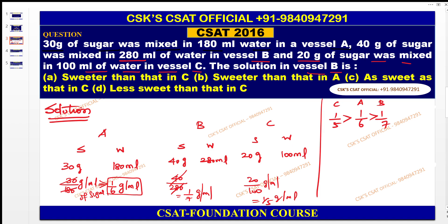Now go with the options after finding this. Sweeter — check with B: B is the least. Sweeter than C? No, C is the sweetest. Sweeter than A? No, B is the least. As sweet as C? No, not equal. Less sweet than C? Yes — C is greater than B means B is less than C. So the fourth option D is the correct answer.